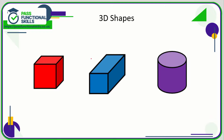Let's take a look at 3D shapes. The only 3D shapes you'll come across are cubes, cuboids, and cylinders. Let's take a quick look at some of the key properties of these three-dimensional shapes.